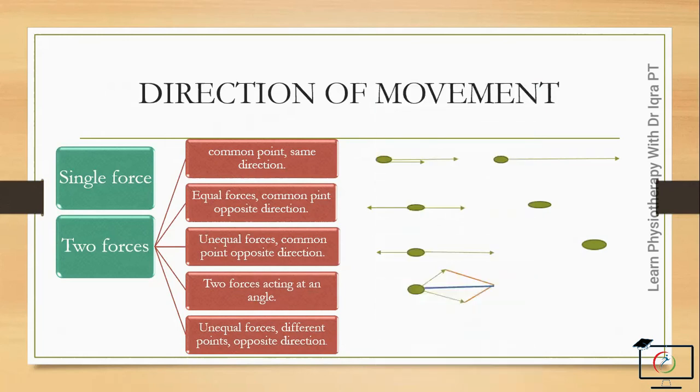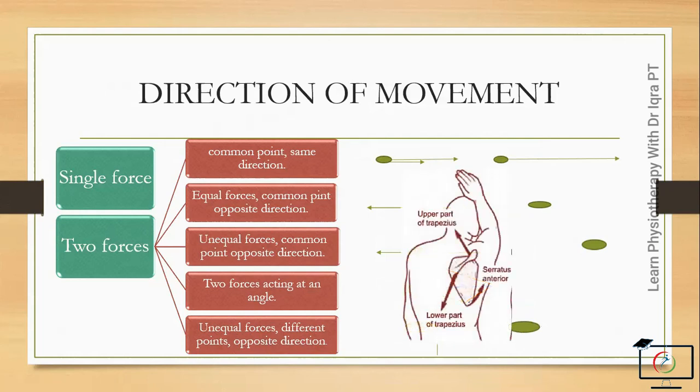And if two unequal forces acting on different points in opposite direction, then they will cause a rotational movement that is also known as torque. For example, in our human body, the serratus anterior produces an anterior force on the scapula, while the upper and the lower trapezius fibers cause the backward force on the scapula. Under these forces, the scapula rotates.